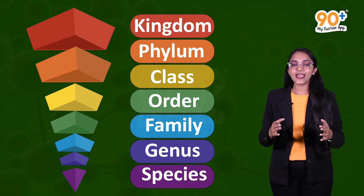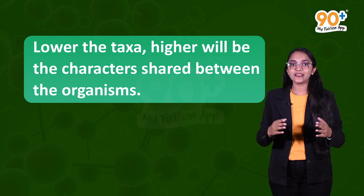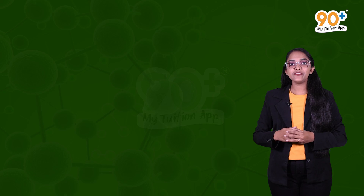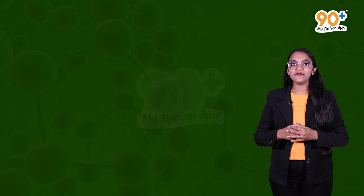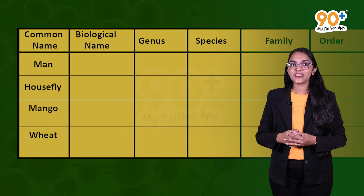This is the taxonomic hierarchy going from the lowest taxon, species, to the highest taxon, kingdom. The common characters decrease as we go from lowest to highest taxa. So the lower the taxon, the higher the characters shared between organisms. Some organisms may not qualify conditions in a single taxon and will be categorized under subcategories.